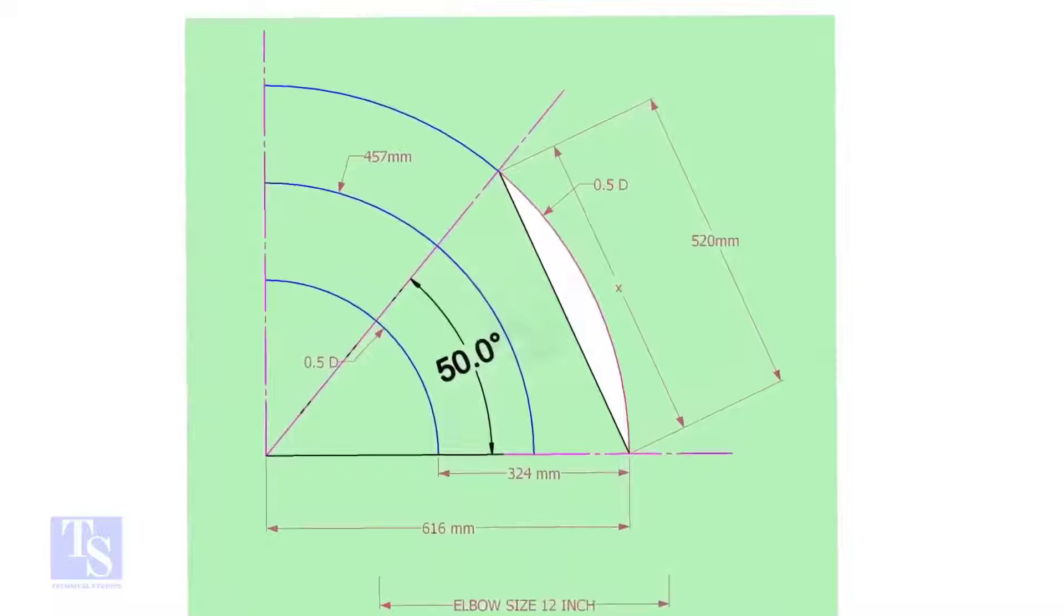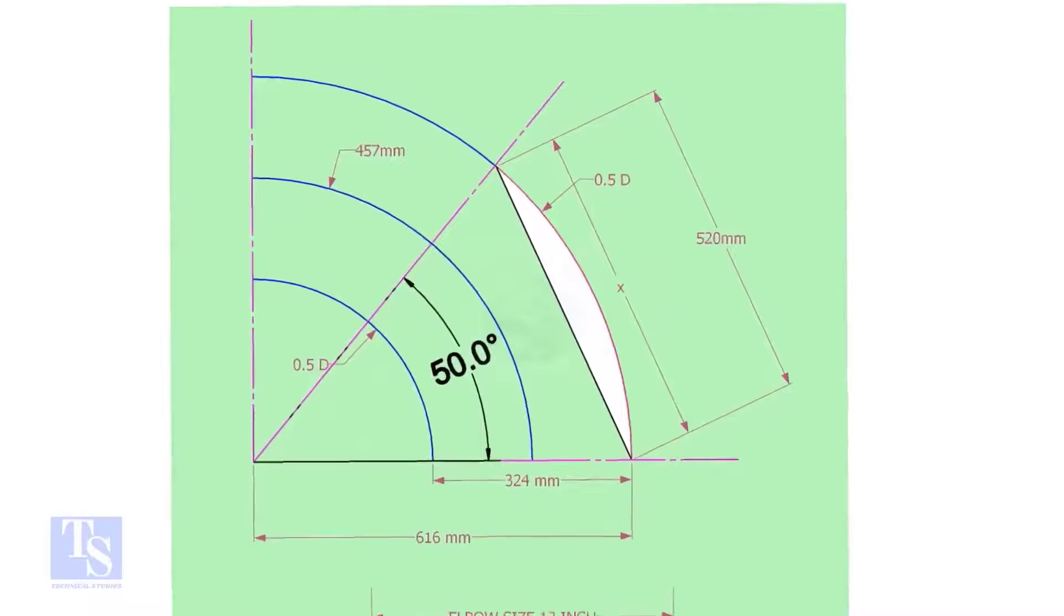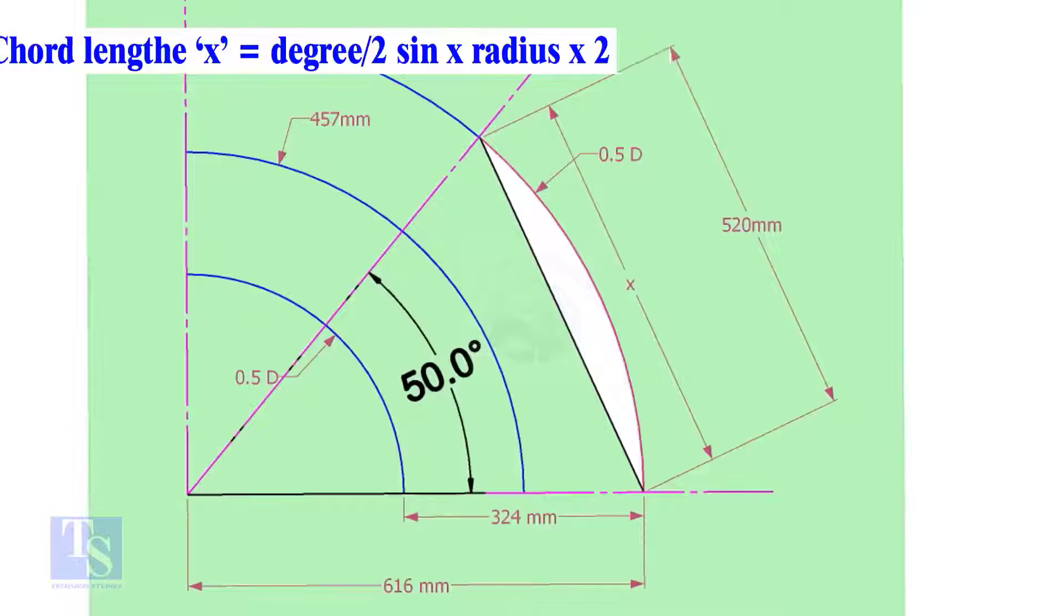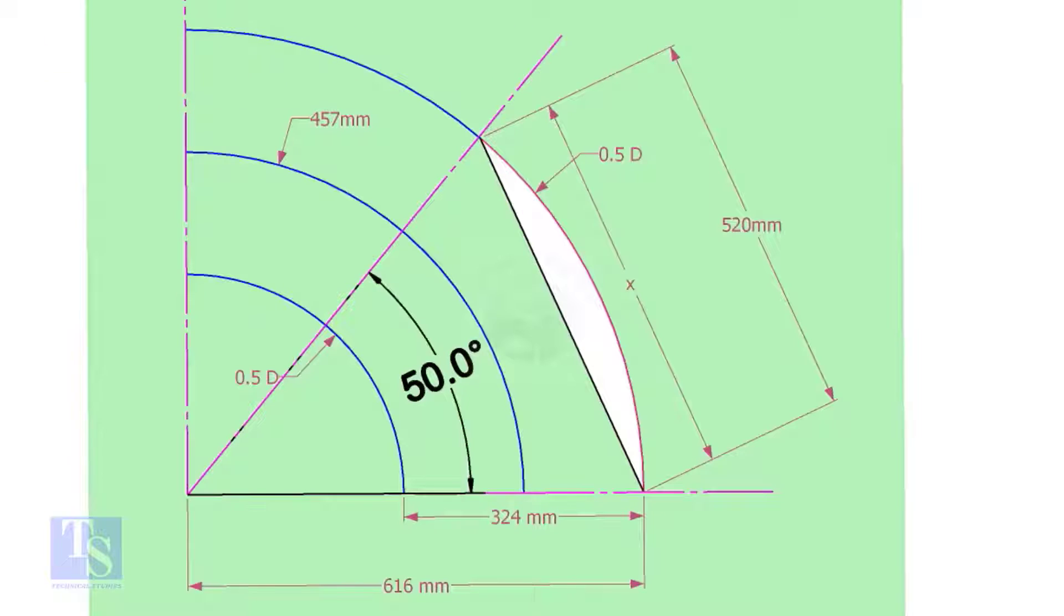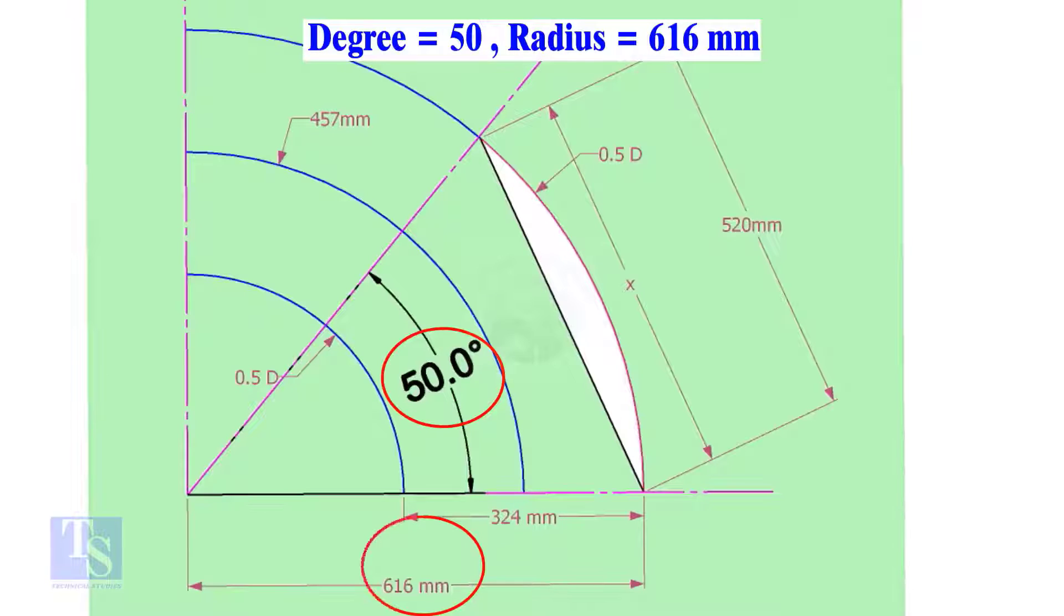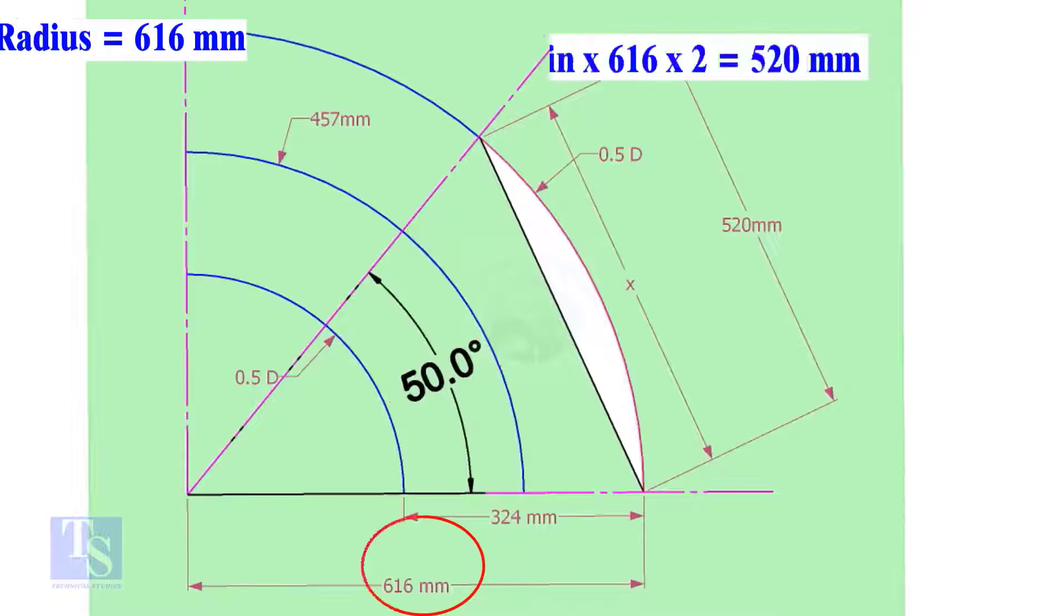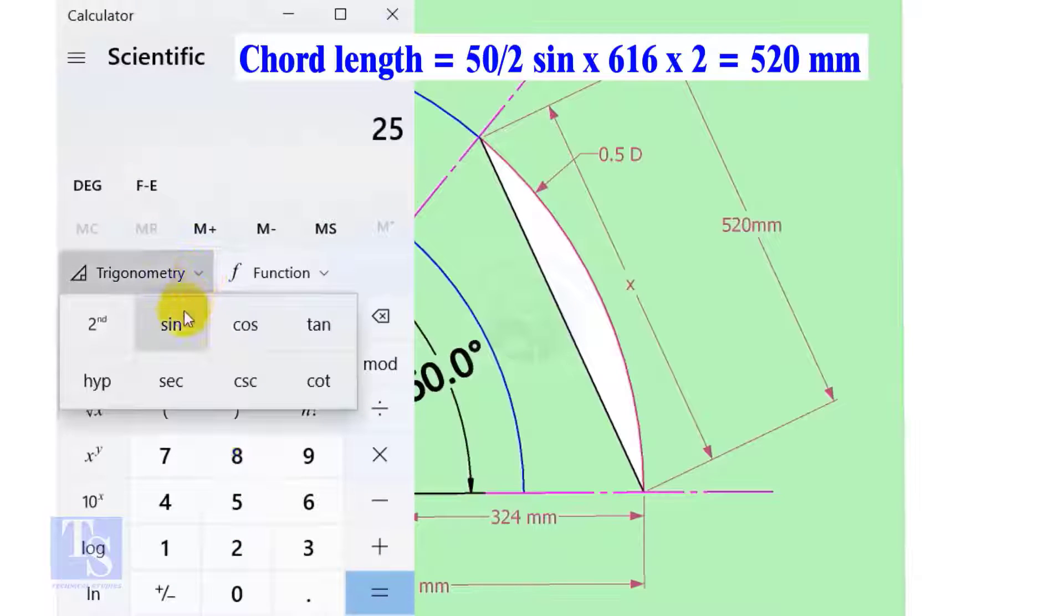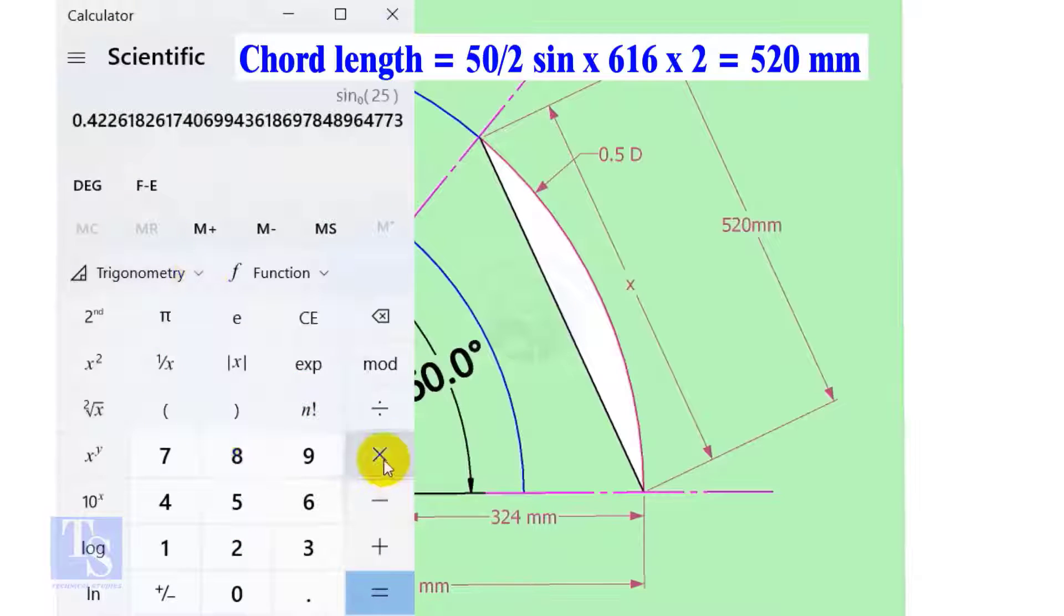Let us calculate the cord length for 50-degree of the outer arc. Cord length X equals half-degree sine multiplied by 2 radius. Here the degree is 50, and the radius is 616 millimeters. Cord length equals 25 sine multiplied by 616, multiplied by 2 equals 520 millimeters.